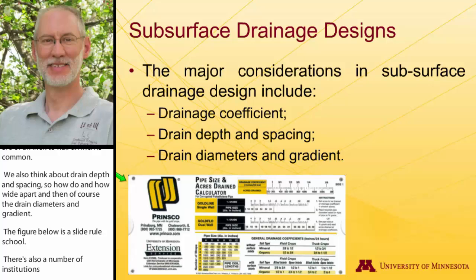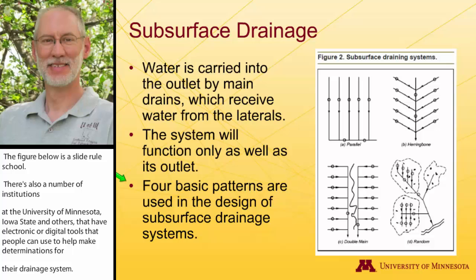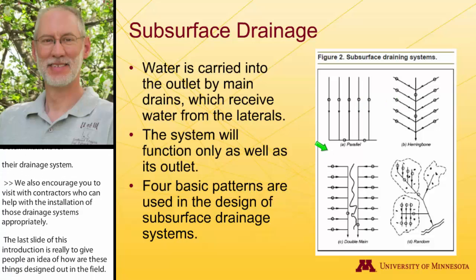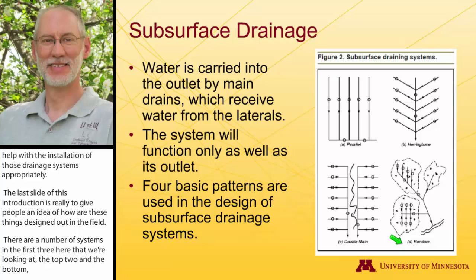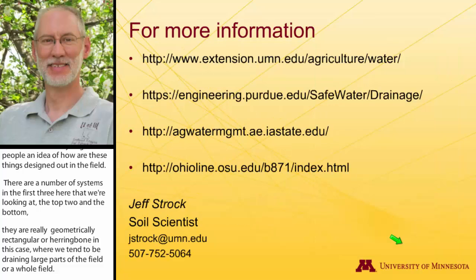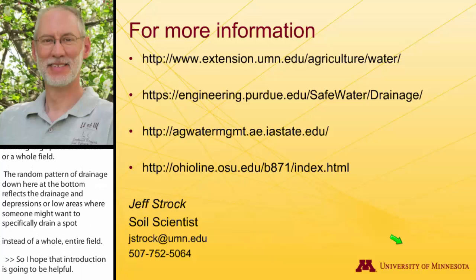The last slide of this introduction gives people an idea of how these things are designed in the field. There are a number of systems. The first three — the top two and the bottom — are geometrically rectangular or herringbone patterns, where we tend to be draining large parts or whole fields. The random pattern at the bottom reflects the drainage of depressions or low areas where someone might want to specifically drain a spot instead of an entire field. I hope this introduction is helpful, and there are a number of resources from various institutions where you can find more information.